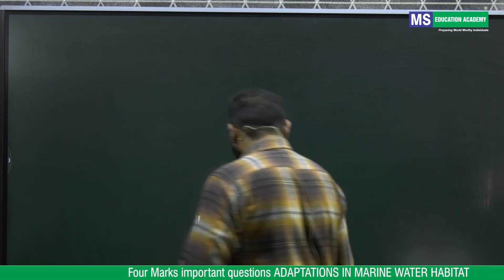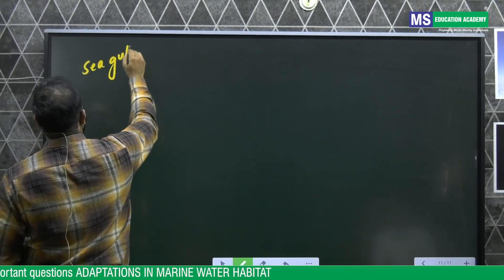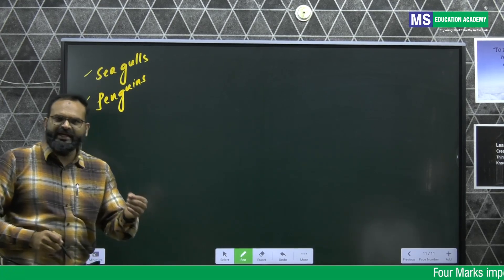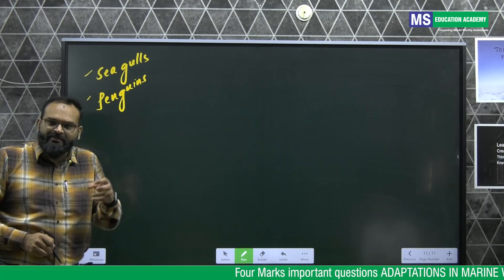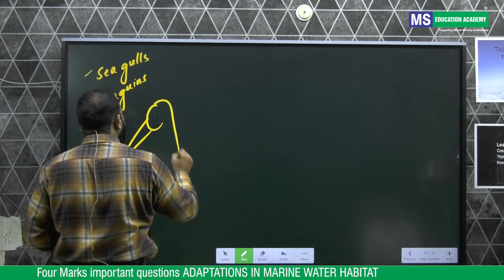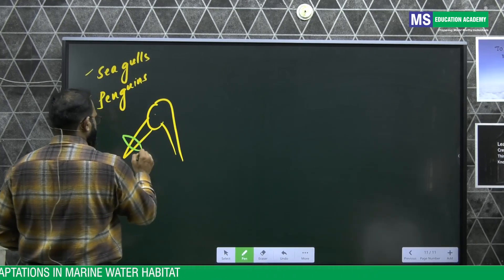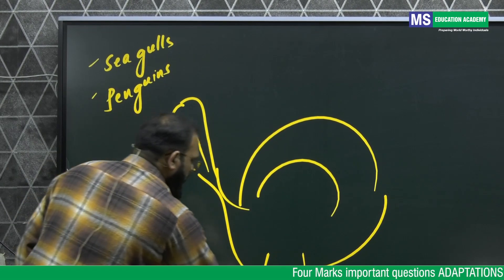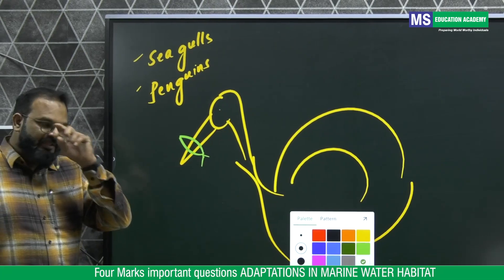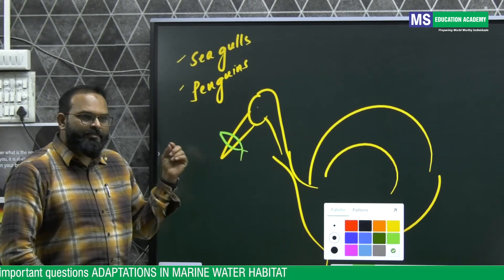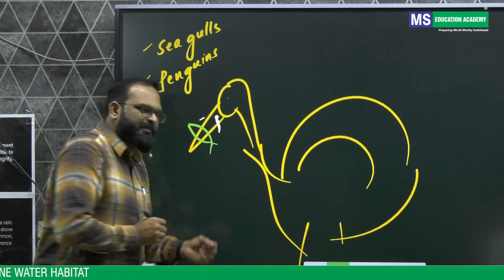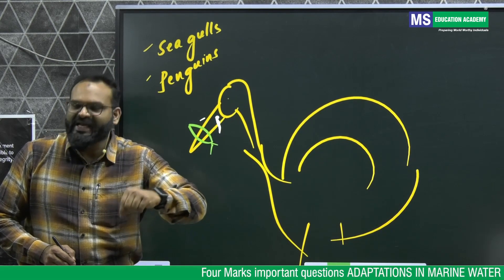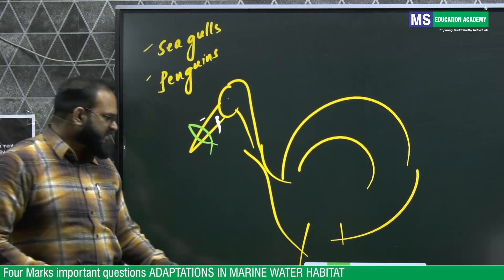What about birds? Some seabirds like seagulls and penguins drink seawater when they eat fish. If they drink too much seawater, their body's osmoregulation may fail. To overcome this and eliminate excess salts, these seabirds continuously drip the excess salts through their nostrils as nasal passages — this is how they remove excess salts.